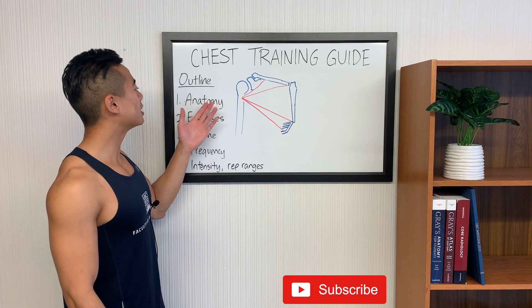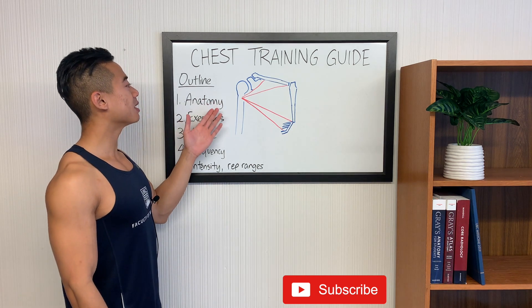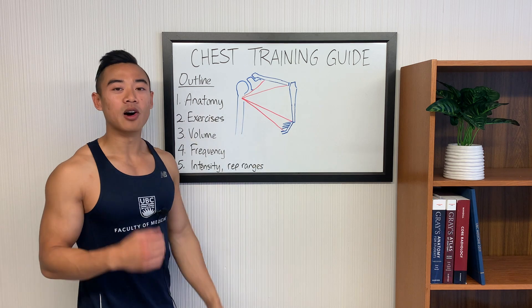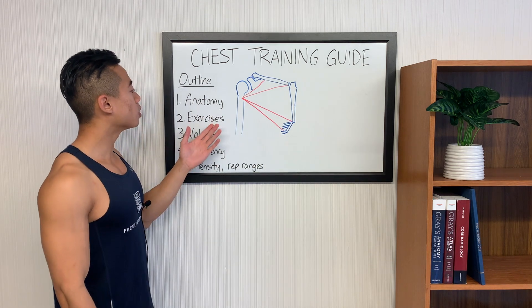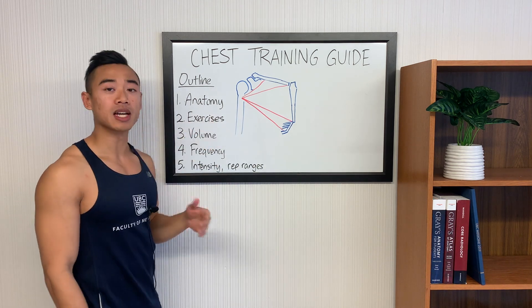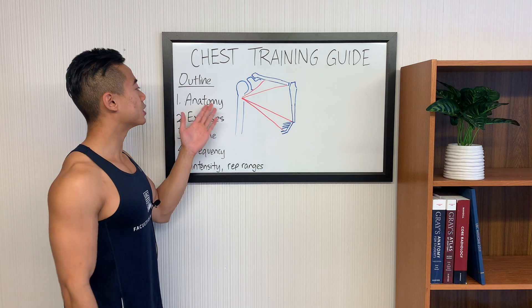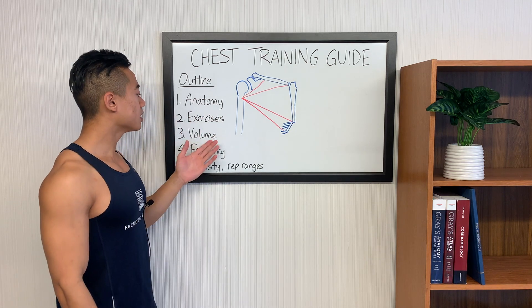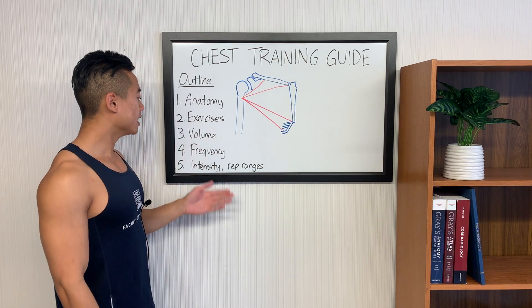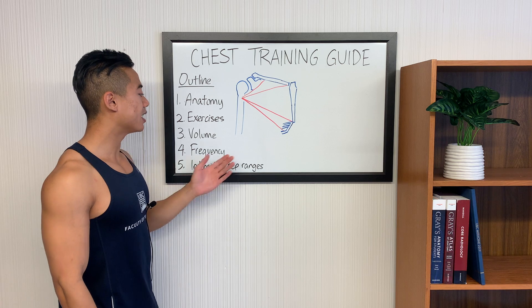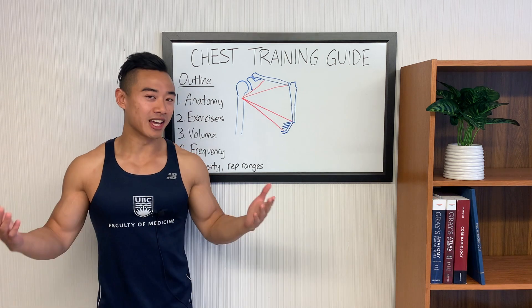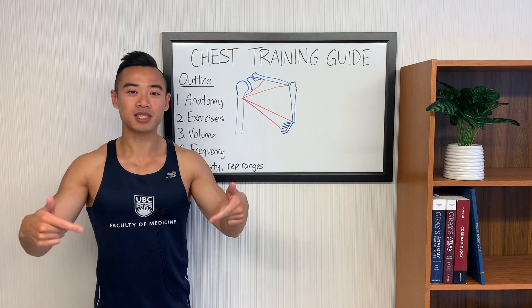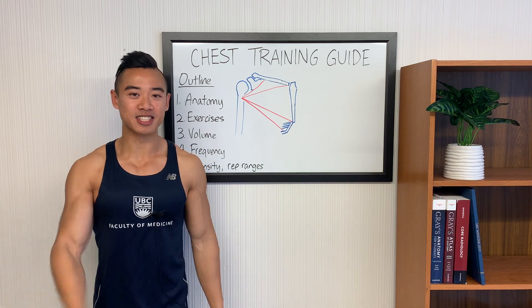Quick outline for today: we're going to start off by talking about the anatomy of the chest, and you'll see that I've drawn this diagram already for you guys. Moving on, we'll go on to exercise selection using our understanding of anatomy. Then we'll talk about volume, frequency, intensity, and rep ranges. Make sure you smash that like button, hit subscribe, and let's get into it.